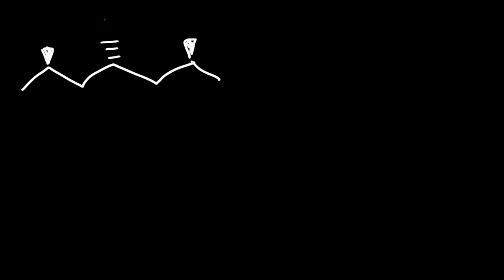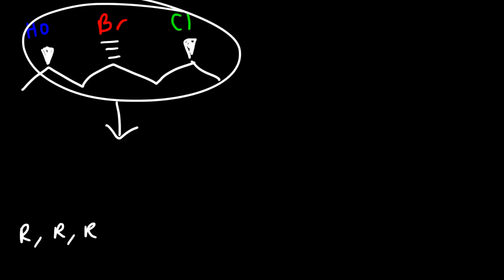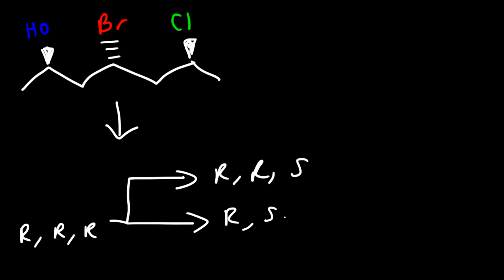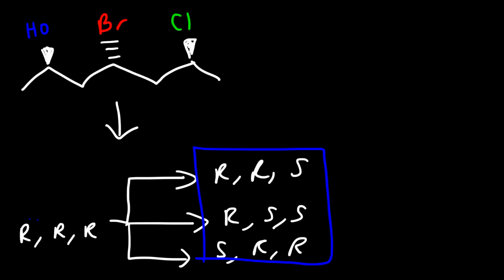Let me give you another example. Let's say we have a molecule with three chiral centers — draw two diastereomers of this molecule. To draw a diastereomer, we need to change some, but not all of the chiral centers. So if we have a molecule with configuration RRR, we could draw RSS — in that case we changed two chiral centers — or SRR, where we changed one but a completely different chiral center. All of these molecules are diastereomers of the original one.